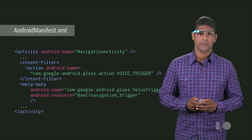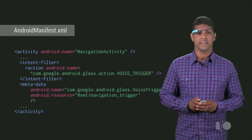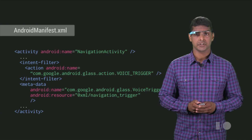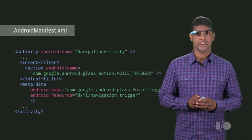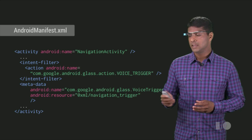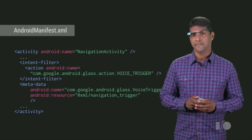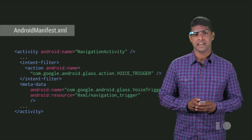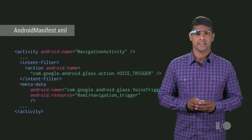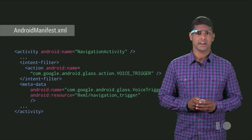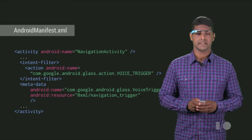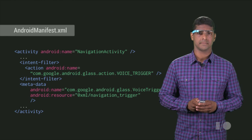Next, you'll need to refer to this voice trigger in the activity definition of your Android manifest file. Here's the Android manifest for the Google Maps navigation Glassware. You can see that the navigation activity references the navigation trigger resource we just defined in its metadata section.